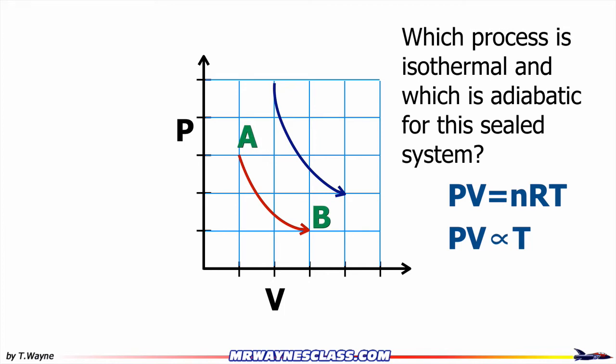I'll look at the pressure times volume for A, and I get 3 times 1. I'm not actually calculating the temperature, I'm just looking at it as a comparison. So 3 times 1, that's 3, and for location B, that's 1 times 3, so that's also 3. 3 on both ends, so the temperature is the same because the product of PV is the same. So the red curve is the isothermal curve.